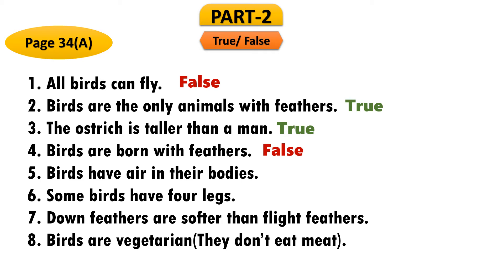Number 6: 'Some birds have four legs' — false, because birds have two legs; insects can fly but they are not birds and they have more legs. Number 7: 'Down feathers are softer than flight feathers' — true, because down feathers are quite soft while flight feathers are harder, as you can observe on a chicken.